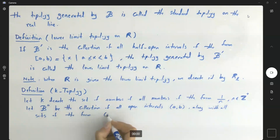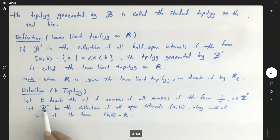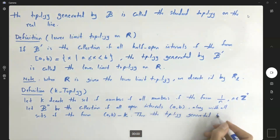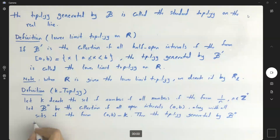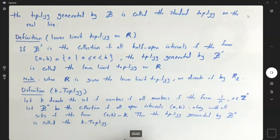Along with all sets of the form — the open interval minus the set K, which denotes all numbers of the form 1 over n — the topology generated by B double prime is called the K topology. When R is given this topology, it is denoted by R sub K.